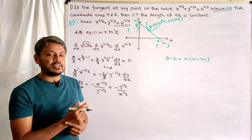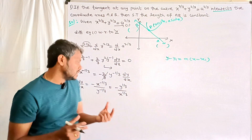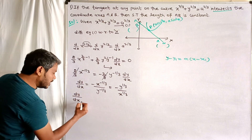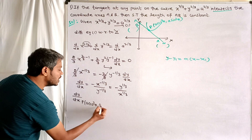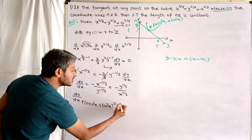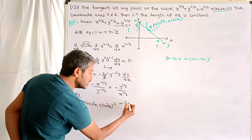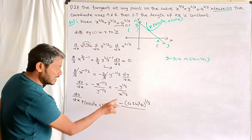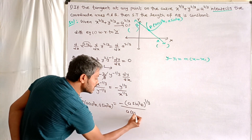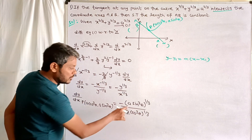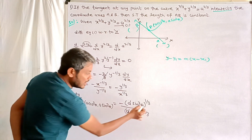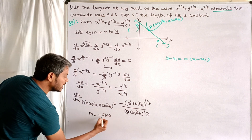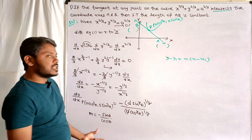Now find the slope of the tangent at point P = (a cos³θ, a sin³θ). dy/dx at P = -(a sin³θ)^(1/3) / (a cos³θ)^(1/3). The a's cancel and the cube roots simplify, so the slope m = -sinθ / cosθ.